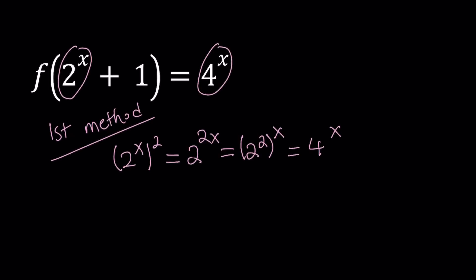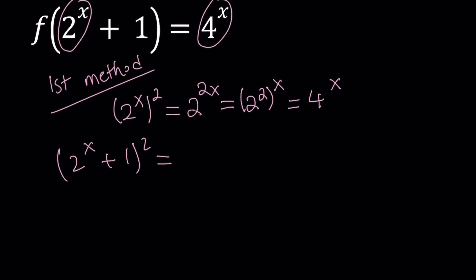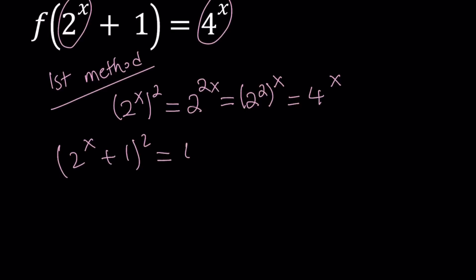Now let's go ahead and square what's inside the parentheses, which is 2 to the power x plus 1. If you square 2 to the power x plus 1, you apply the (a+b)² formula — that gives us a squared plus 2ab plus b squared. We're multiplying 2 to the power x times 2 on the right-hand side, but we don't have 2 to the power x plus 1 there directly.